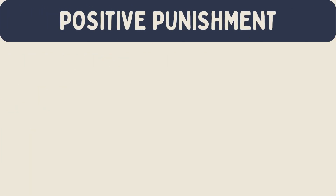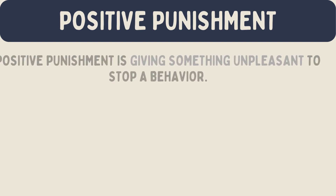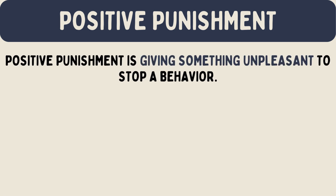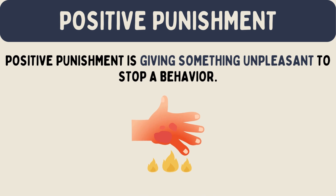Positive punishment is giving something unpleasant to stop a behavior. For example, if you touch a hot stove and get burned, you are less likely to touch the stove again. The burn is a positive punishment.